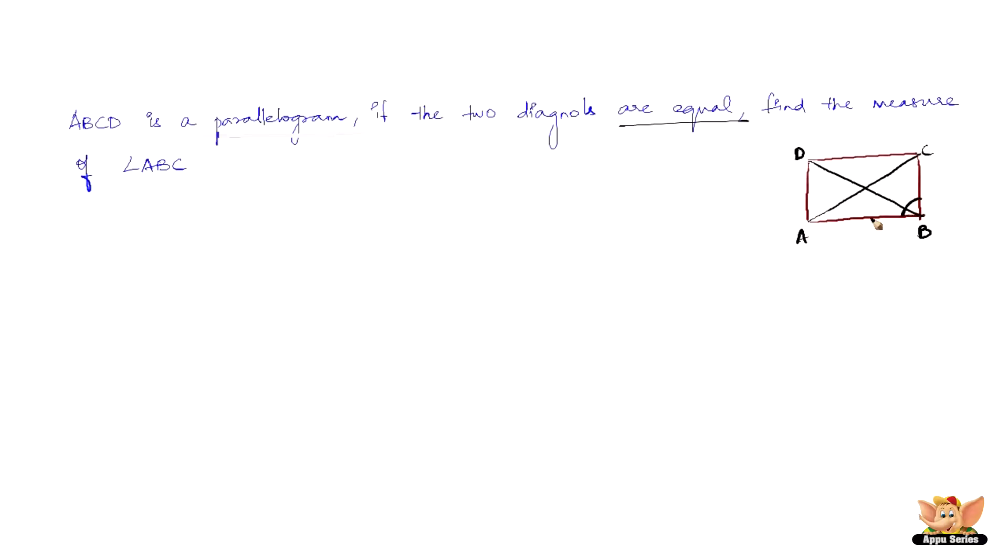So let us see how to go about that. Since ABCD is a parallelogram, therefore, we have AB equals CD and AD equals BC. This is because opposite sides of a parallelogram are equal. Now thus,